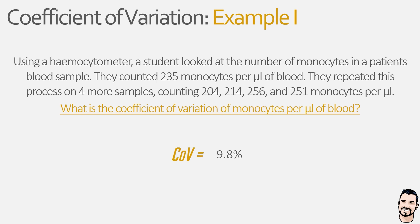But what does this mean? Well, it essentially means the data within the dataset deviates from the mean by almost 10%, so we would expect to see values 10% above and 10% below the mean. Now let's look at a second example.